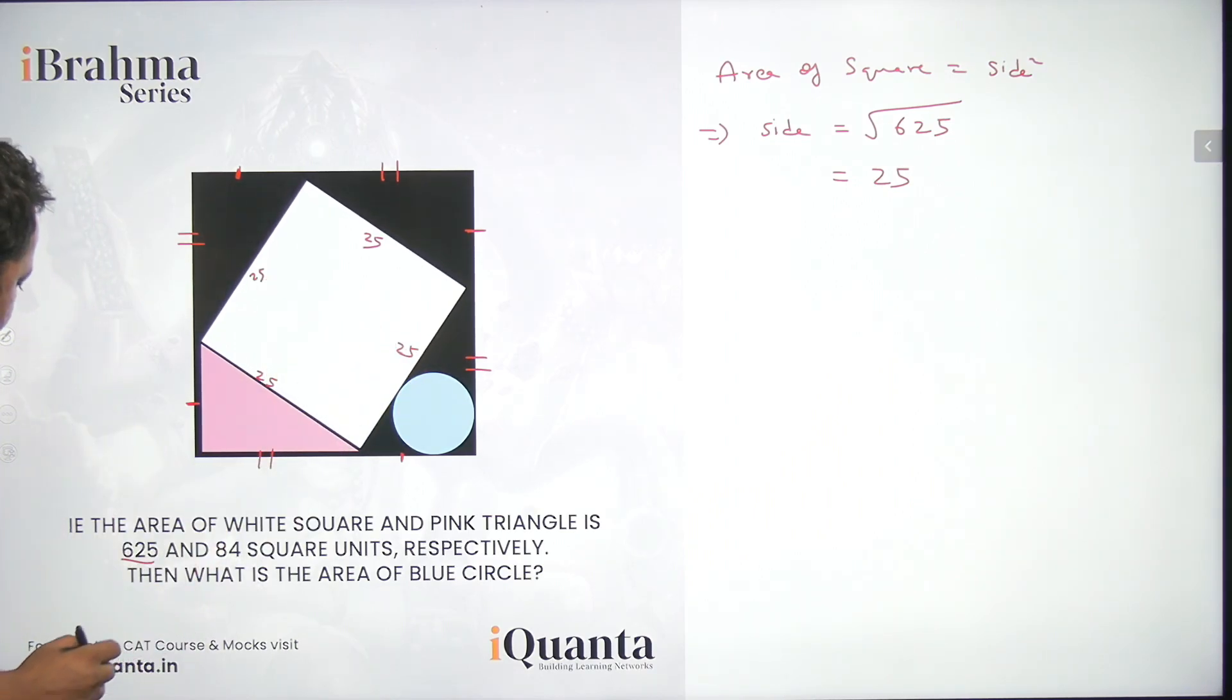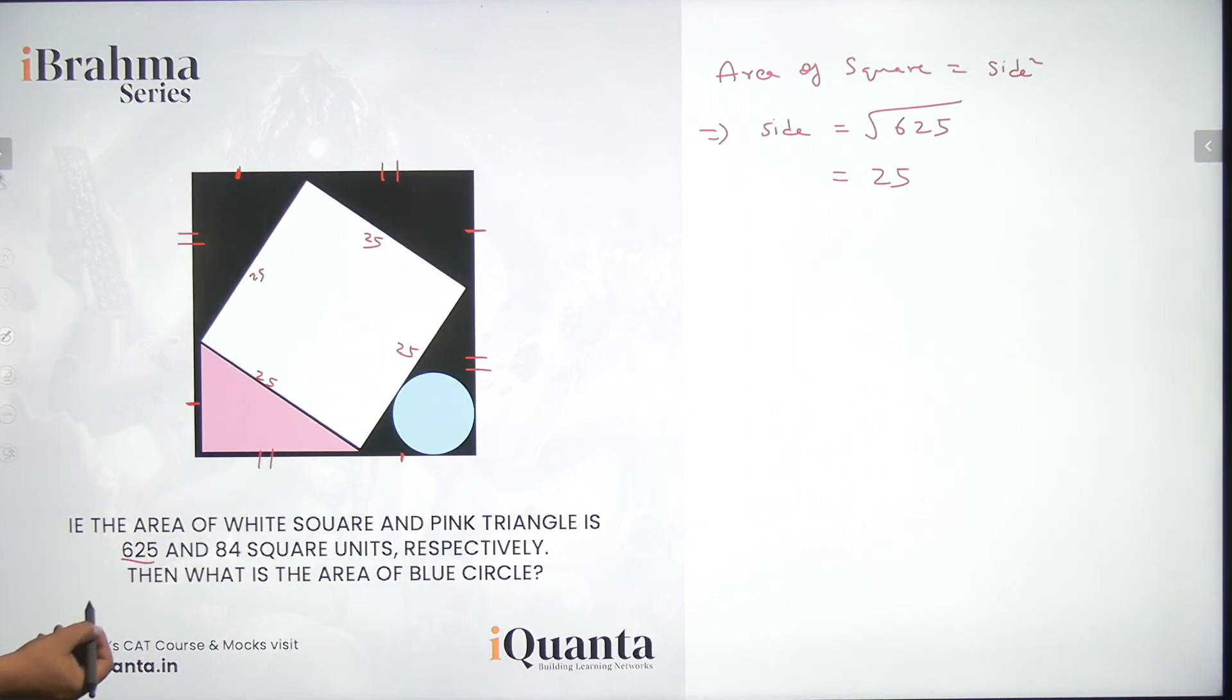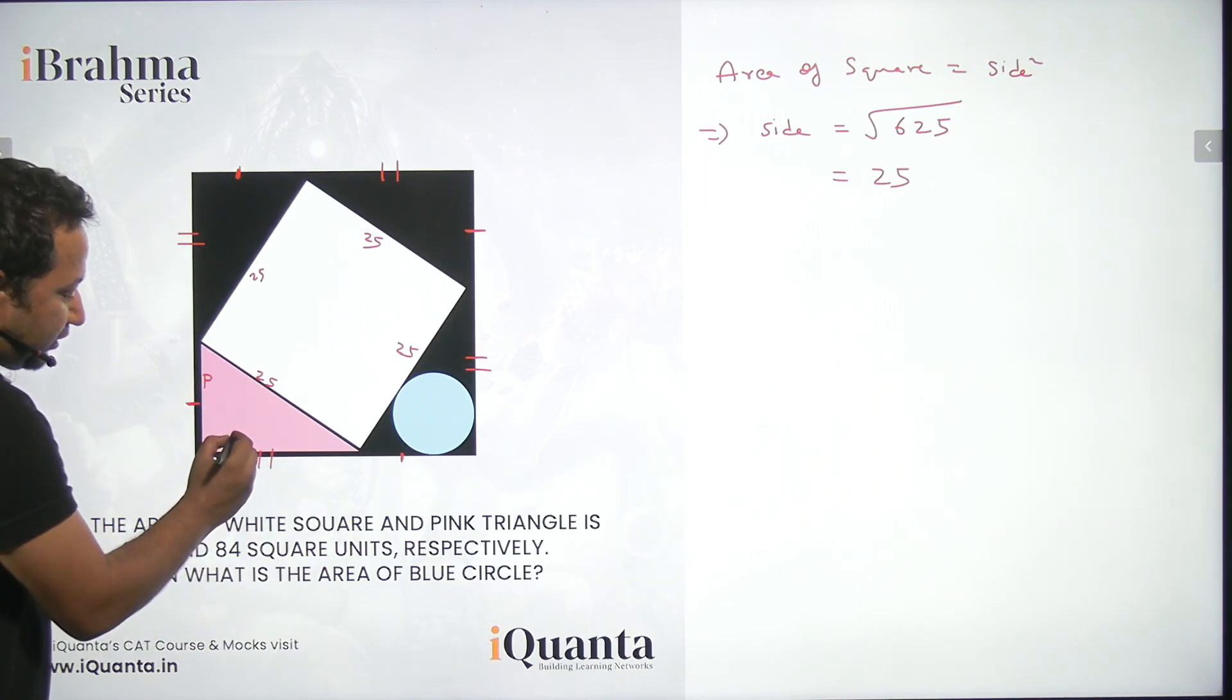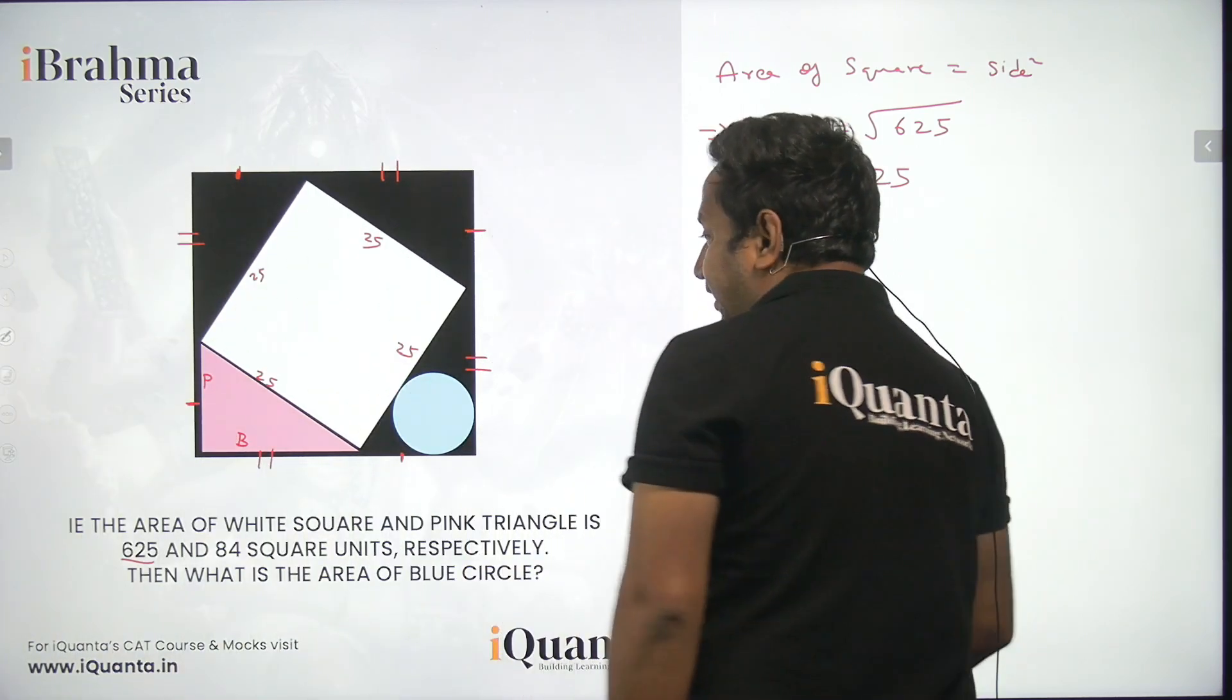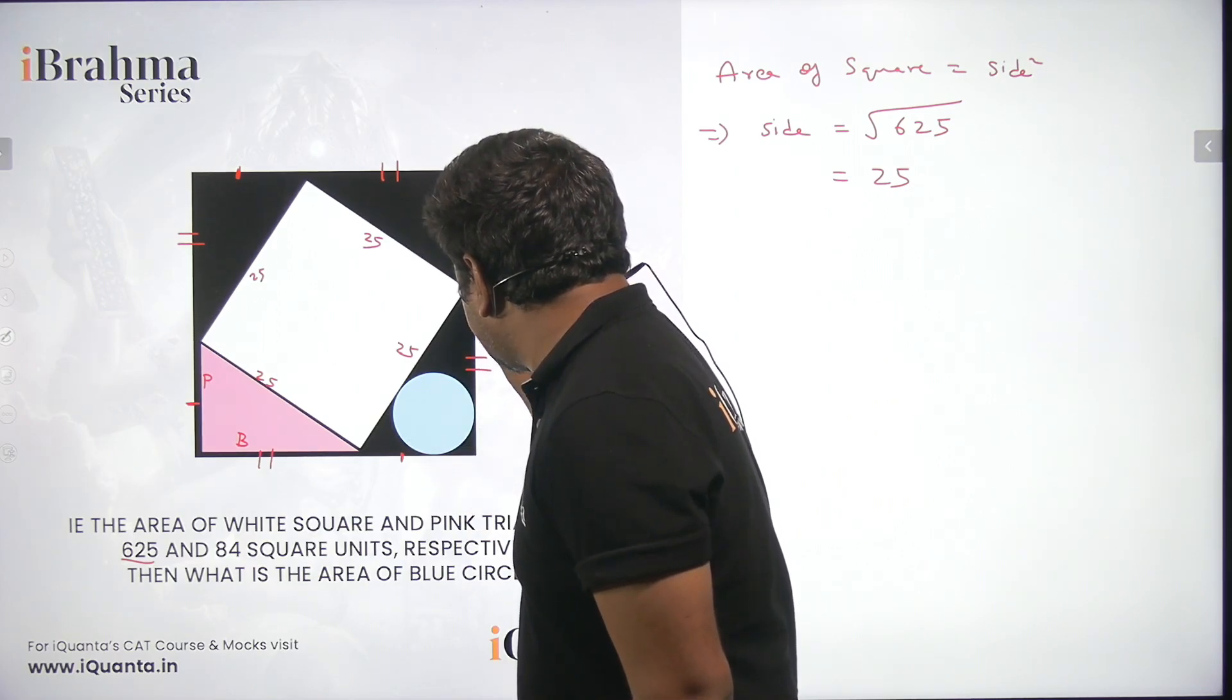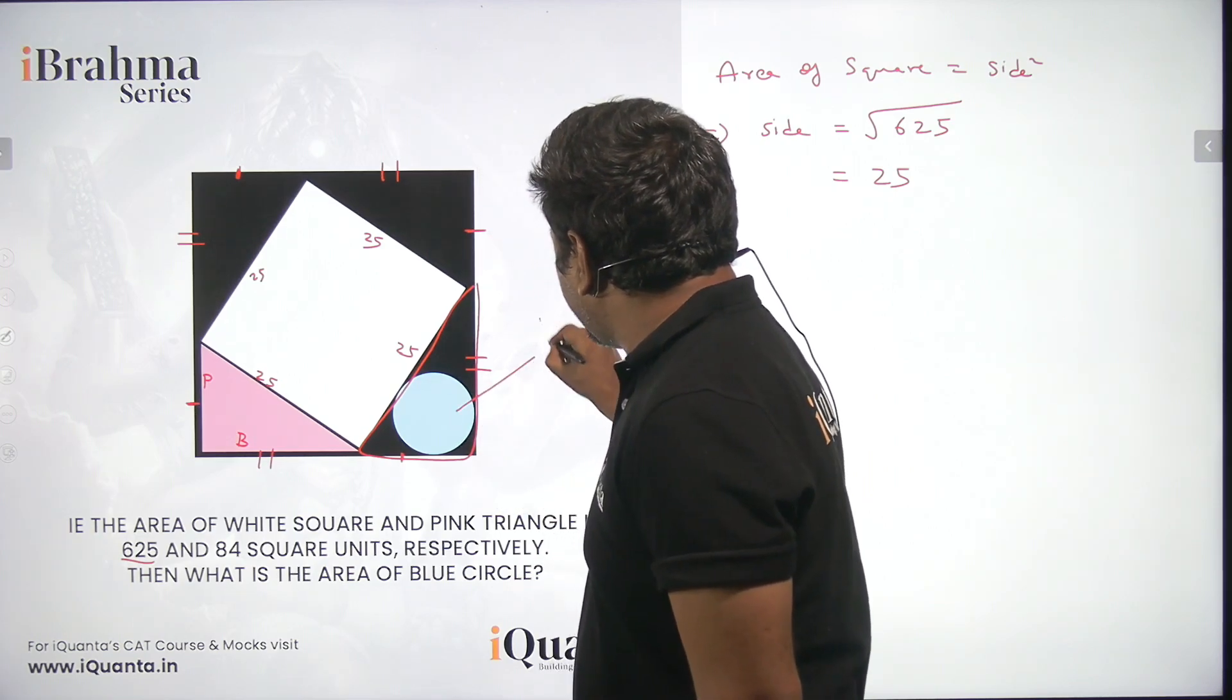Now once we have done this, we can notice that the side of the white square is coinciding with the hypotenuse of the pink triangle. That means the hypotenuse of the pink triangle can be 25. Let this side be called as P or perpendicular and this side we call as B, that is base. So this is a right angle triangle and by using Pythagoras theorem, we can calculate the values of P and B.